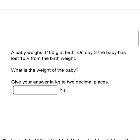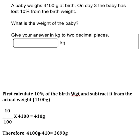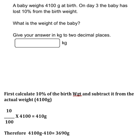The next question says a baby weighs 4100 grams at birth. On day three the baby has lost 10 percent of the birth weight. What is the weight of the baby now? Give your answer in kg to two decimal places. To solve this, we first calculate 10 percent of the birth weight of 4100 grams.